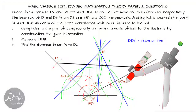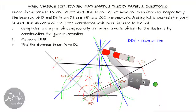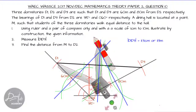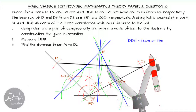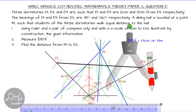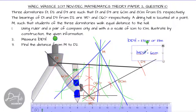We are asked to find the distance from M to D2. Note that the distance M to D2 is the same as M to D1 and M to D3. Checking with the compass, we verify that the distances from D2 to M, D1 to M, and D3 to M are all equal — confirming that M is equidistant from all three dormitories. The distance from M to each dormitory is 6 centimeters, which converts to 60 meters using our scale. So MD2 equals 60 meters.